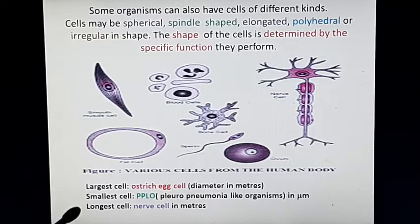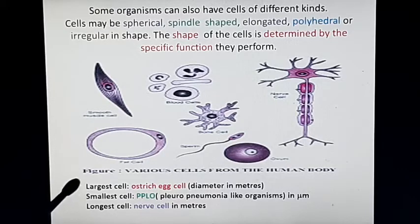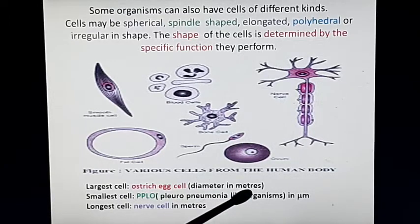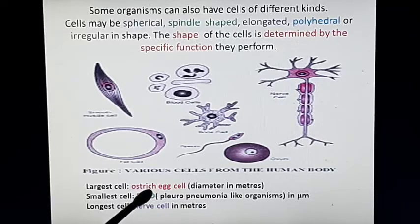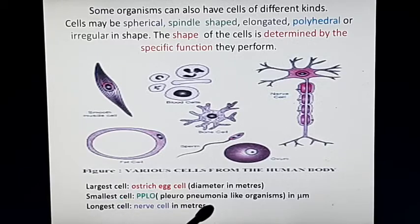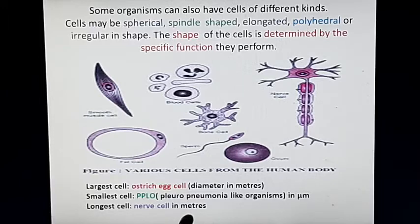Some important points for objective questions: the largest cell discovered so far is the ostrich egg cell, whose diameter is approximately 3 to 6 meters in size. The smallest cell observed is PPLO — Pleuro Pneumonia Like Organism — which is measured in micrometers. The longest cells are the nerve cells, which are measured in meters.